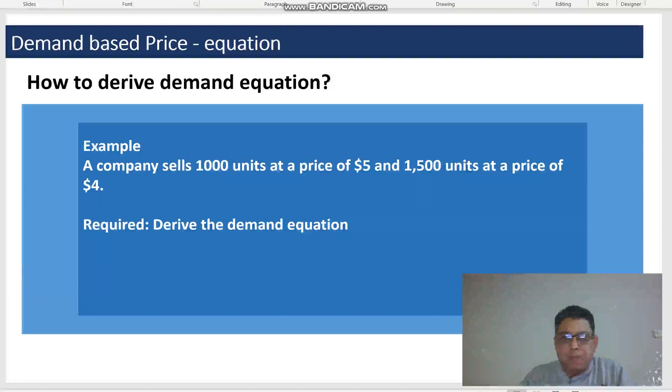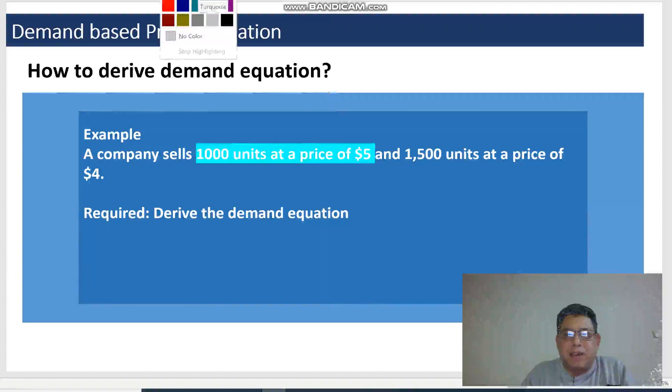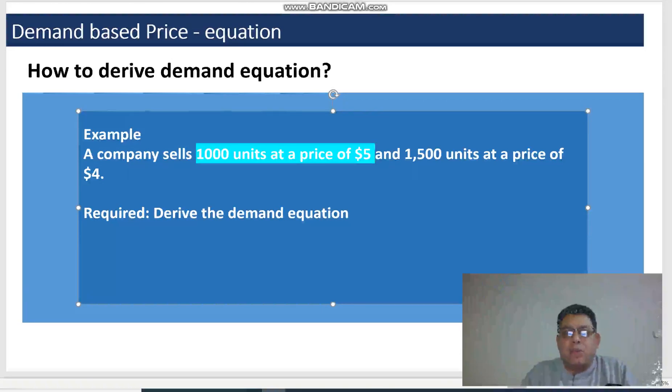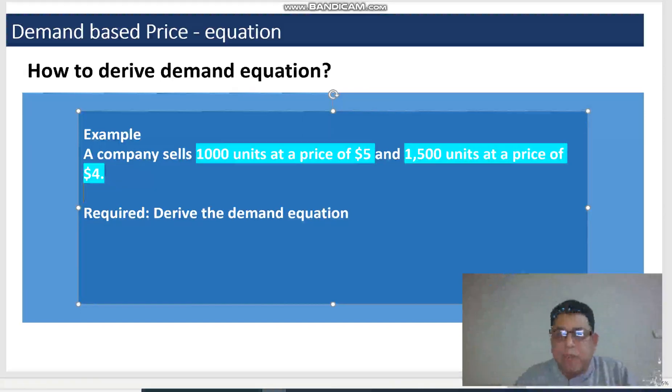A company sells 1000 units at a price of five dollars. So the first price and quantity combination is when the price was 5, then at that time the units were 1000. And when the price was four dollars, we sold more units, like 1500. So when we charge the price of 5, 1000 units were sold, and when we charge the price of 4, we sold 1500 units.